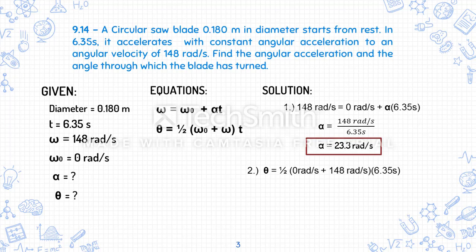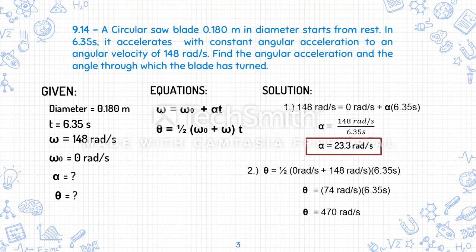Now for the angle: theta equals one-half times (0 rad/s + 148 rad/s) times 6.35 s. Simplifying: 74 rad/s times 6.35 s, which gives us an angle of 470 radians.